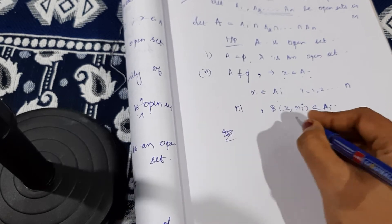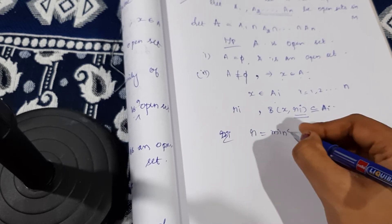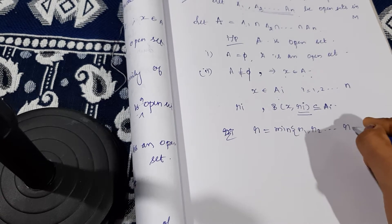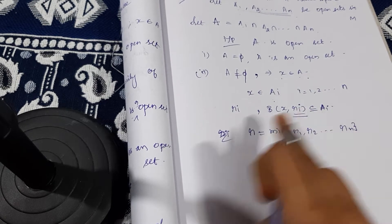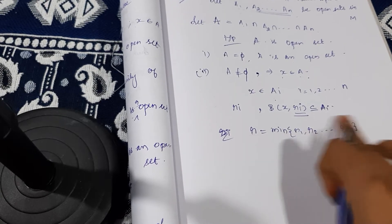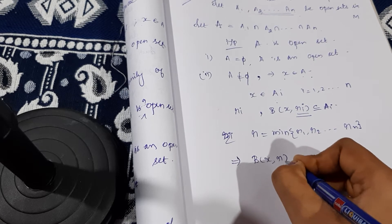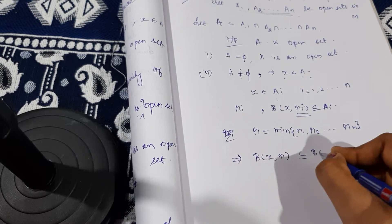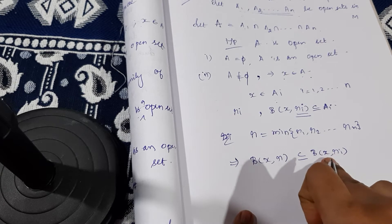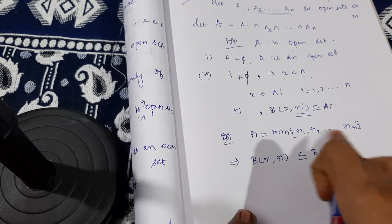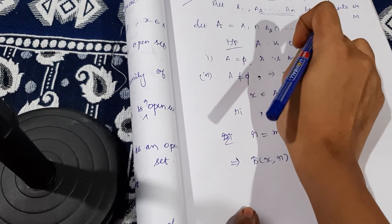Now I am going to generalize this rᵢ. Let r = min(r₁, r₂, ..., rₙ) — that is, r is the minimum value of all the rᵢ's. Then we can say the open ball B(x, r) will be a subset of B(x, rᵢ), because r is the minimum value and rᵢ is larger.